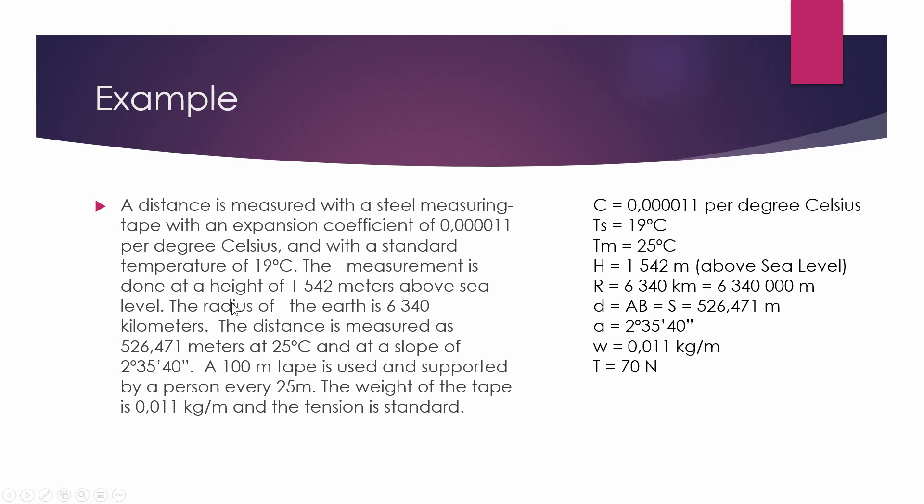Now the measurement is done at a height of 1542 meters above sea level. That's our average height on the site. So we write that as our H value. Then we have the radius of the Earth is 6340 kilometers. We're going to change that to meters because the calculation requires it to be in meters. The distance is measured as 526.471 meters at 25 degrees Celsius at a slope of 2 degrees 35 minutes and 40 seconds. Our D, which is our AB, which is our S, is our distance measured. We've got our alpha now from that degree.